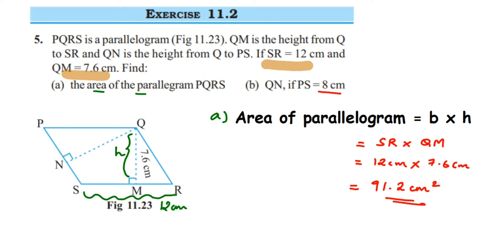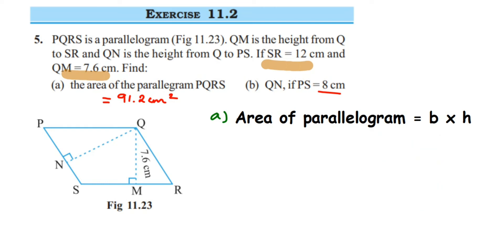Now for the second part: QN is the height and PS is the base. We are given PS = 8 centimeters, and we have to find the height QN. From the first part we already know the area is 91.2 cm², so we use the same formula and substitute the known values to find QN.